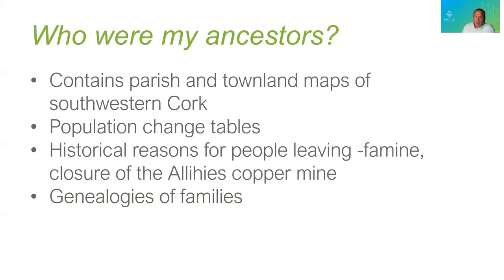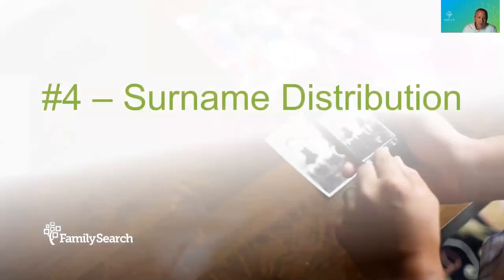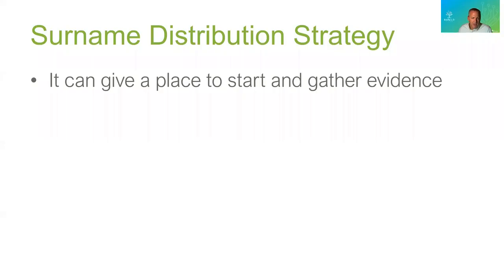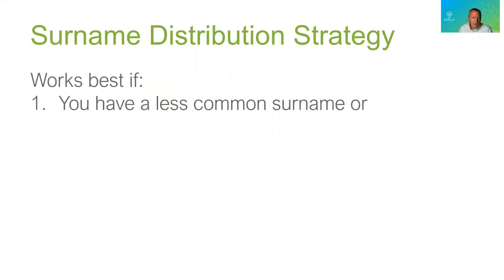As you locate a place in Ireland, something that could fit with that is strategy number four: the surname distribution strategy. It can give you a place to start to gather evidence, as you locate places where your Irish surname is from. It doesn't work as well if you have a very common surname — Kelly and Murphy are obvious examples — but if you have a less common surname, it can be very helpful.